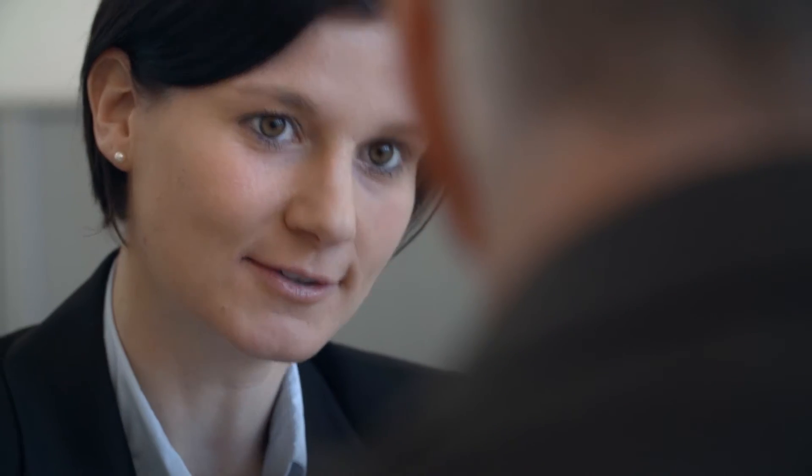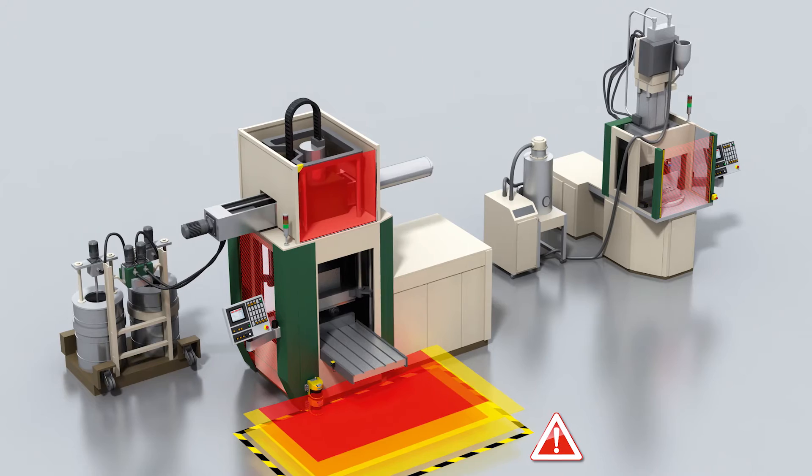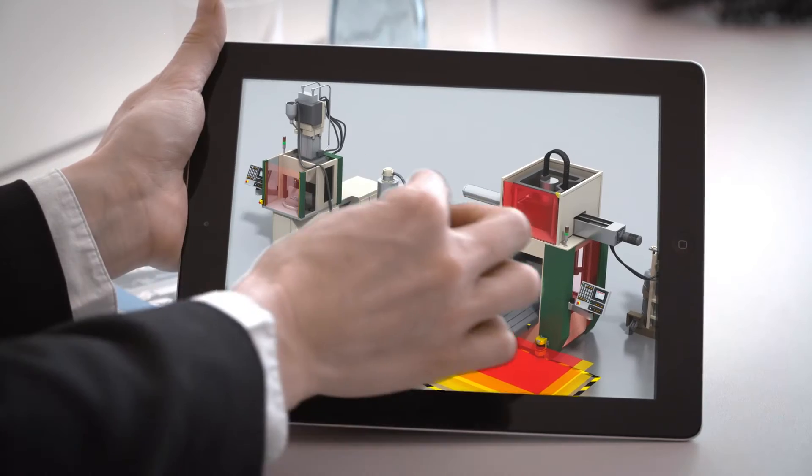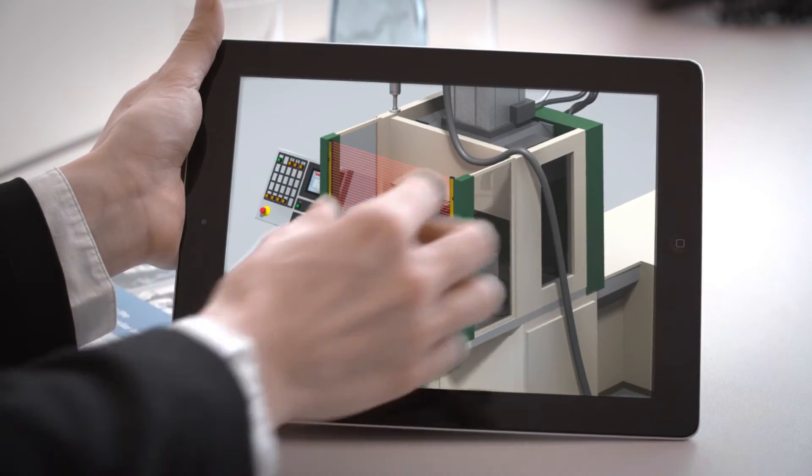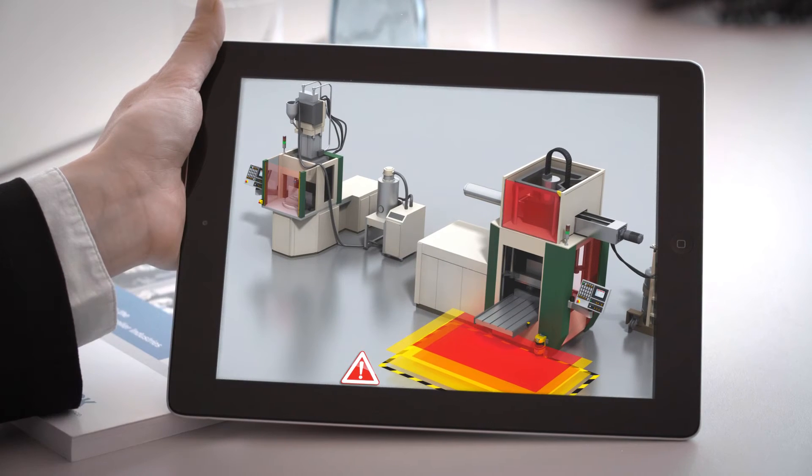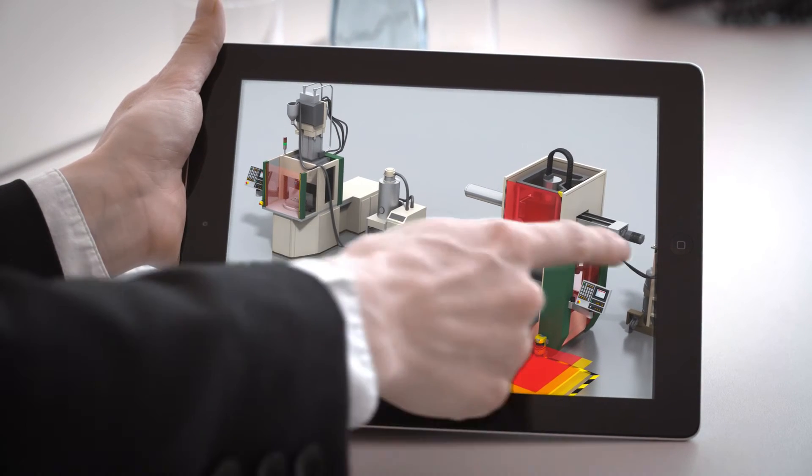The Inspector vision sensor identifies incorrectly positioned inserts on an injection molding machine. This prevents machine downtime and damage to molds.